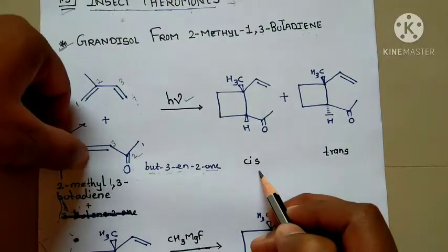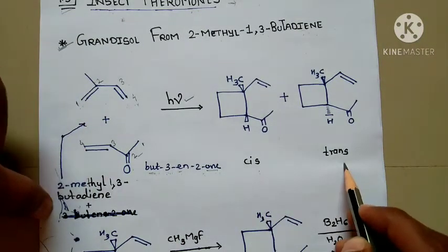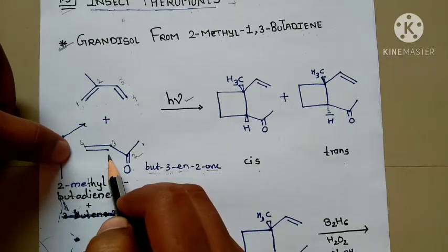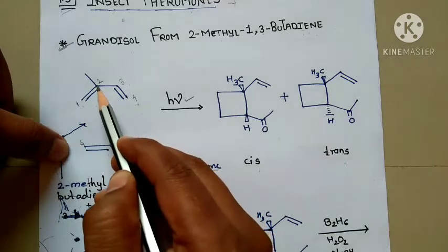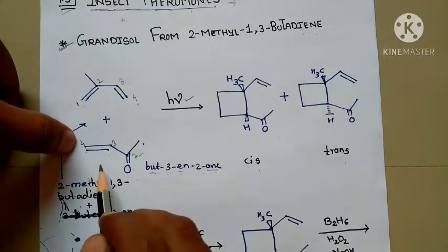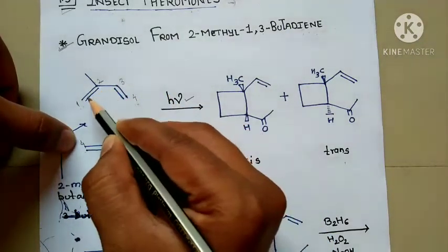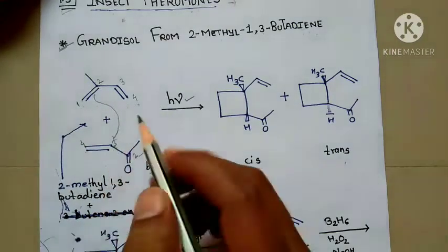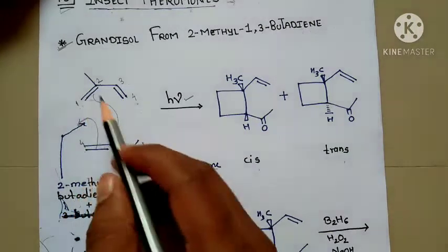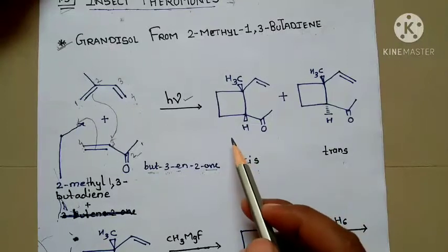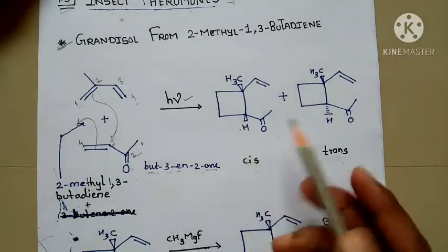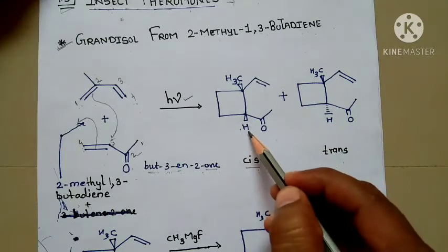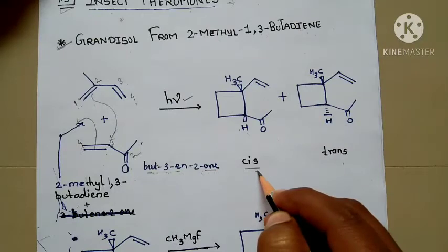You will get two products in the form of cis and trans. This cyclization process takes place between carbon 1 and 2 of the first reactant and carbon 3 and 4 of the second reactant — a simple cyclization. The double bond shifts to between the second and third carbon atoms. You get the cyclic product in cis form. Why cis? Because CH₃ and hydrogen are on the same side.